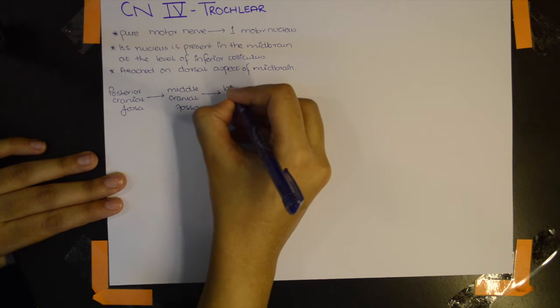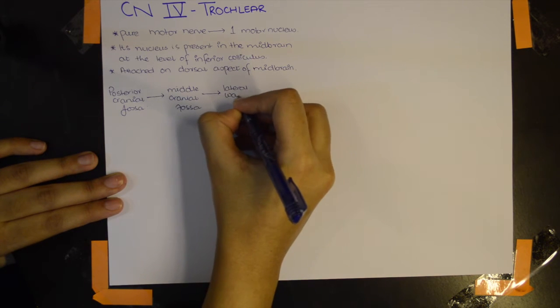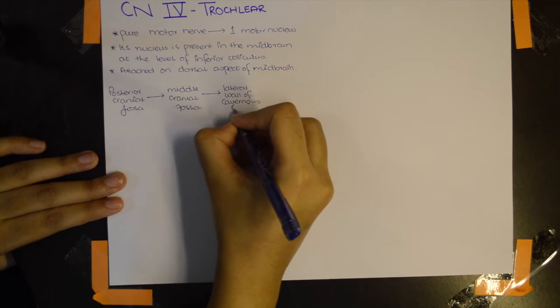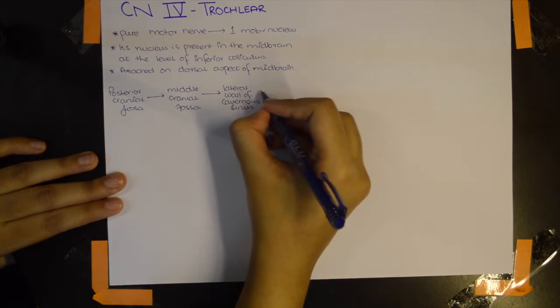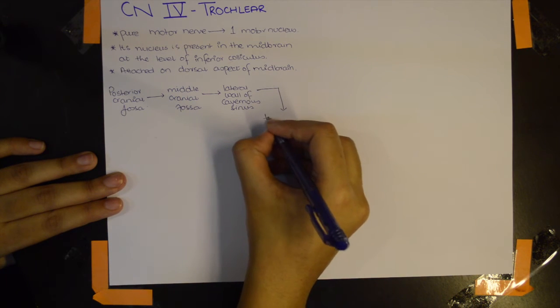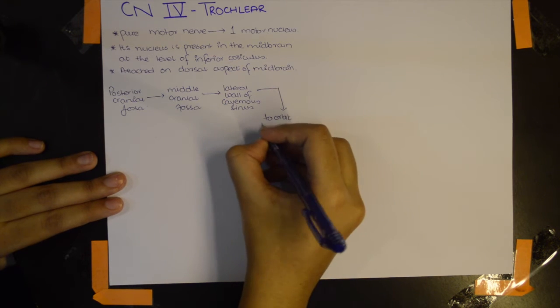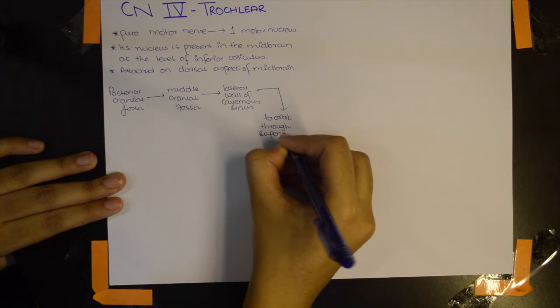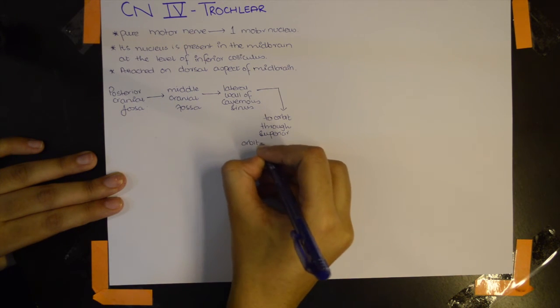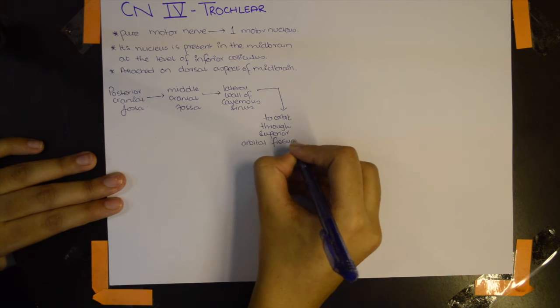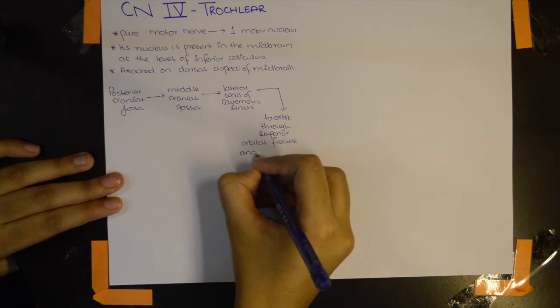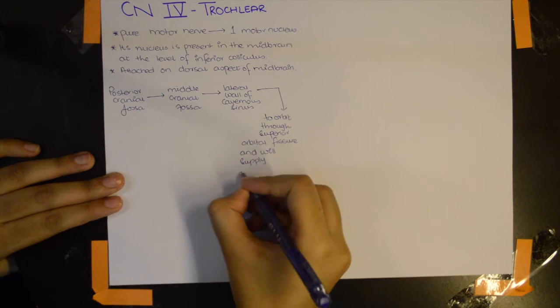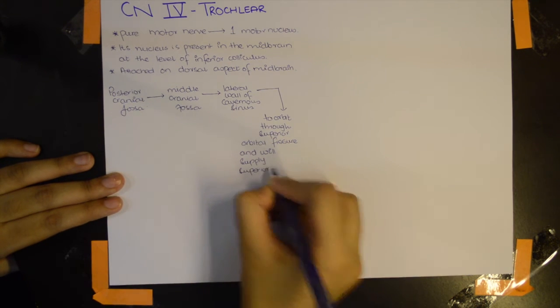Then the lateral wall of cavernous sinus, and then it goes to the orbit through the superior orbital fissure. It will supply the superior oblique muscle.